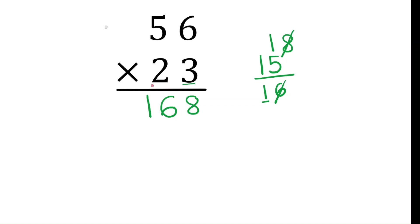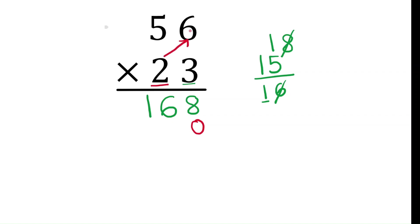Now I am done with the ones place. Moving to the tens digit 2, which represents 20. Since it is in the tens place, write 0 in the ones place of this row. Now multiply 2 with the ones digit of 56: 2 times 6 is 12. Write 2 in the answer and carry 1.